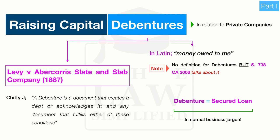We'll also look at the ways and means in which parties are safeguarded in terms of any liquidation that might happen. Firstly, in Latin, 'debentures' refers to 'money owed to me,' and essentially that is the premise we use in relation to how a party is safeguarded — how a party creates a charge on an investment, essentially a loan made to a particular company. Now, when we consider debentures in relation to private companies, there is no dedicated definition section as such.